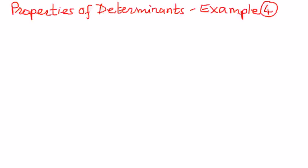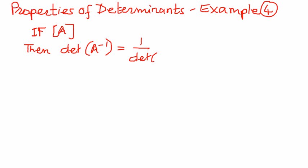In here, one of the properties of determinants is telling us that if A is an invertible matrix, then the determinant of the inverse of that matrix is going to be 1 over the determinant of the matrix A. This is the property. Let us take an example and prove this.